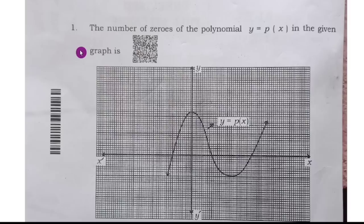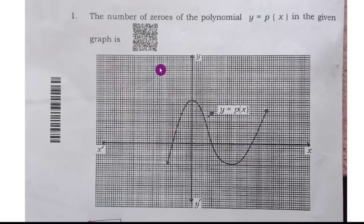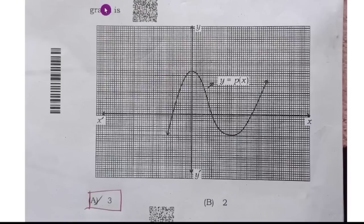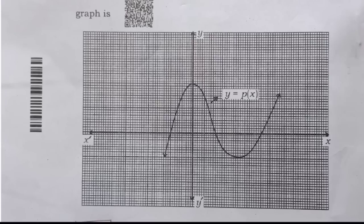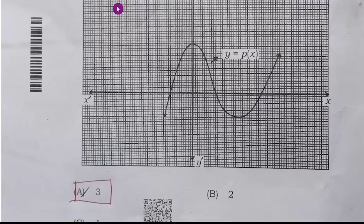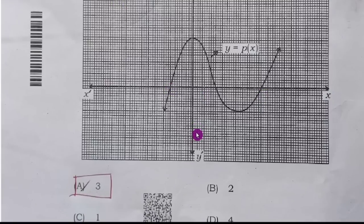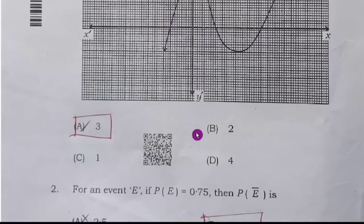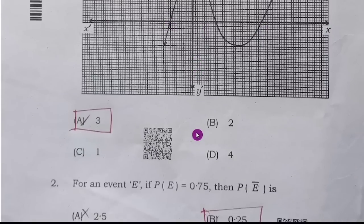First question: the number of zeros of the polynomial y = p(x) in the given graph is. They have given the graph, and you can count: 1, 2, 3. Therefore, option A, 3, is the right answer.